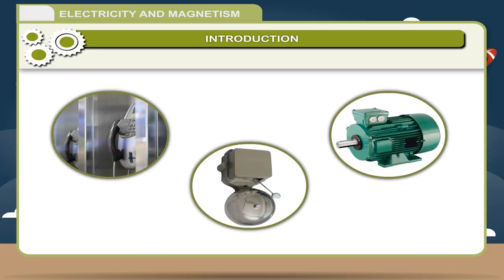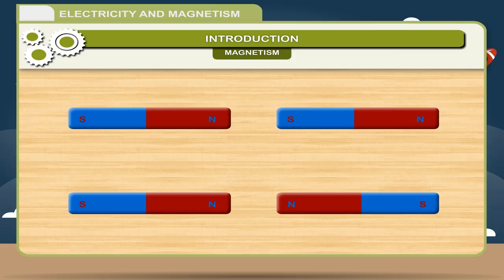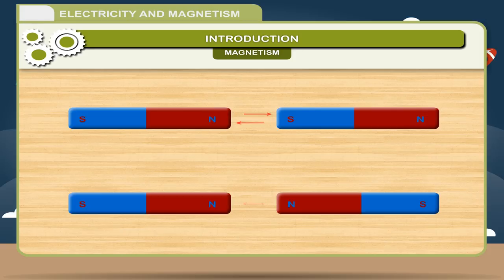In this chapter, we will learn about electricity and magnetism. Magnetism: The property by virtue of which the attraction occurs, or a substance rests in the north-south direction by itself, is called magnetism.